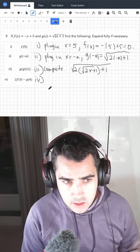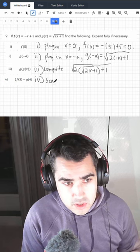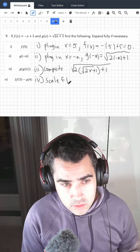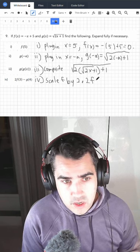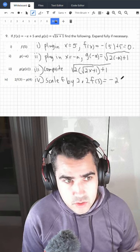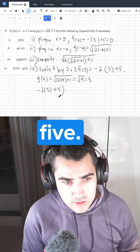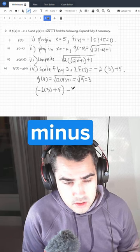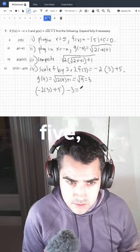Just like that. Now for the fourth part, we need to know how to scale a function. So we're going to scale f by 2 like this. So 2f of 3 is going to be minus 2x minus 2 times 3 plus 5 all minus 3 which is equal to 6 minus 6 plus 5